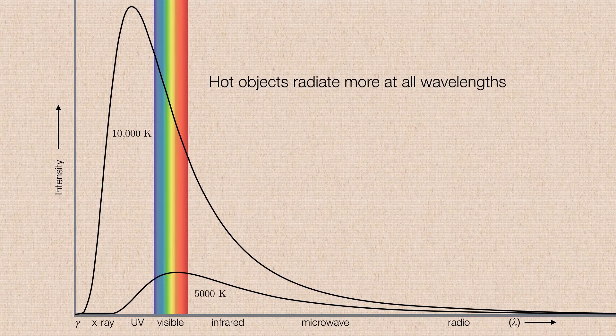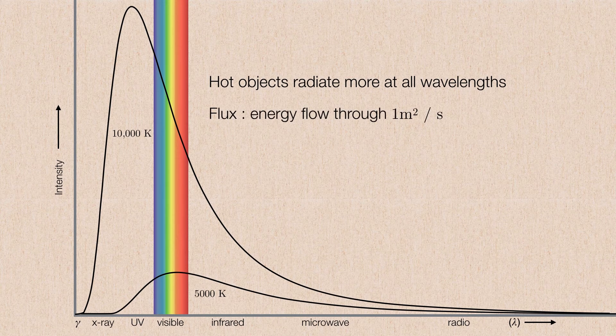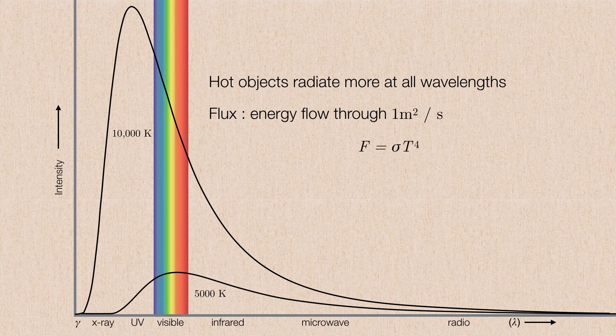So hot objects radiate more at all wavelengths. There's a way to describe just how much radiation is coming out of an object by limiting the energy going through a fixed unit area of the object every second. Typically that means a fixed area like one square meter. The amount of energy going through a square meter of area per second is something we call flux. It's energy flow. We can express that mathematically as flux equals a constant multiplied by the temperature raised to the fourth power.